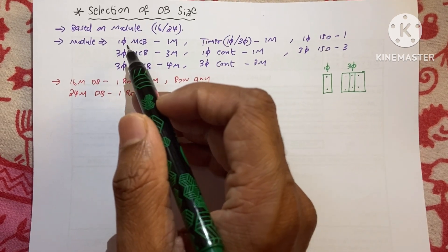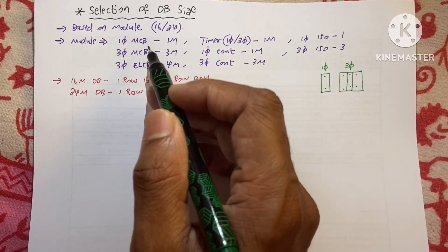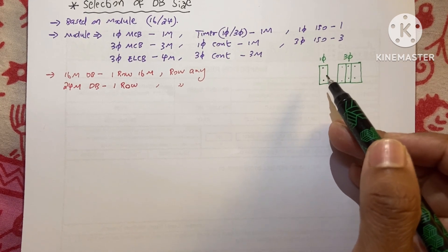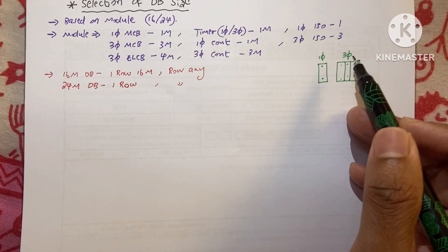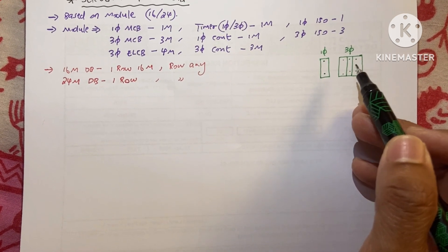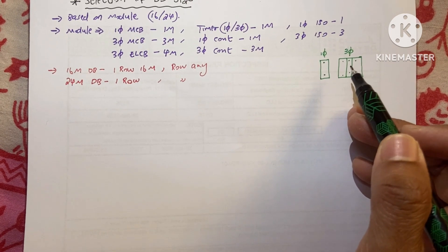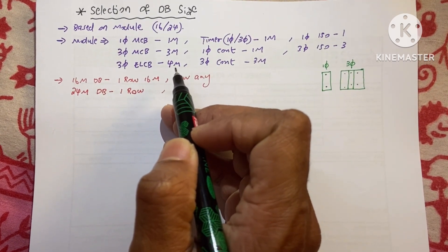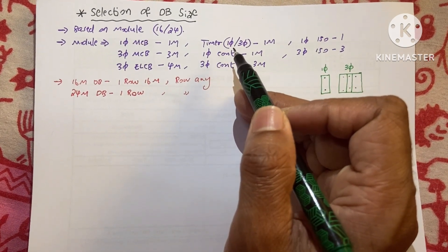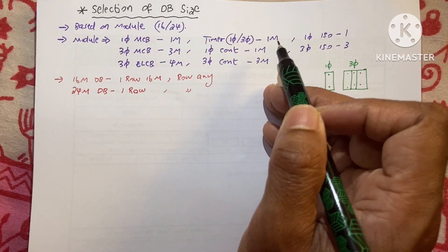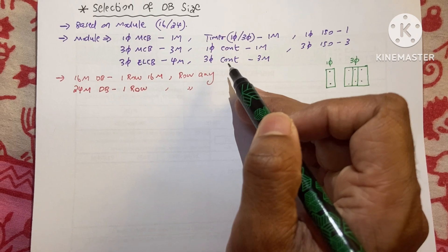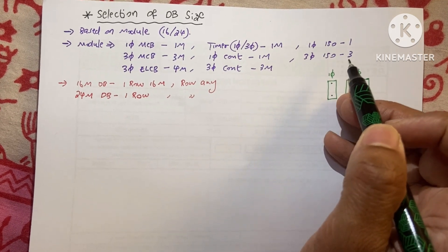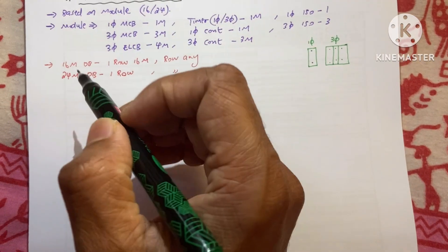A module also refers to the space that a device occupies. A single-phase MCB takes one module space. A three-phase MCB takes three module spaces. A three-phase ELCB takes four module spaces — three phases plus one for the neutral. Timers, whether single-phase or three-phase, take one module space. A single-phase conductor takes one module, a three-phase conductor takes three modules, a single-phase isolator takes one module, and a three-phase isolator takes three modules.